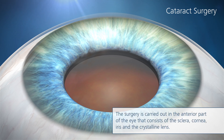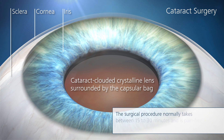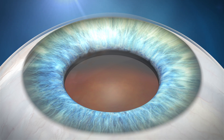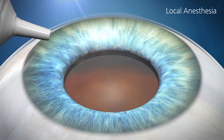The surgery is carried out in the anterior part of the eye that consists of the sclera, cornea, iris and the crystalline lens. The surgical procedure normally takes between 15 to 30 minutes and is pain free. In general, local anesthesia is used. The most common form are eye drops applied directly to the eye prior to the surgery.